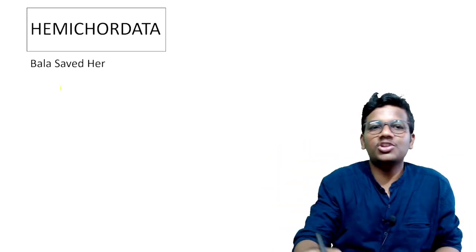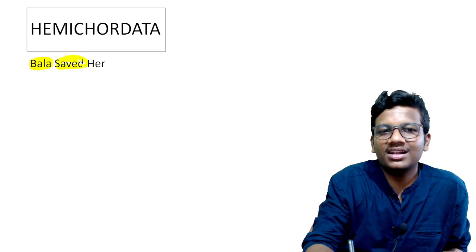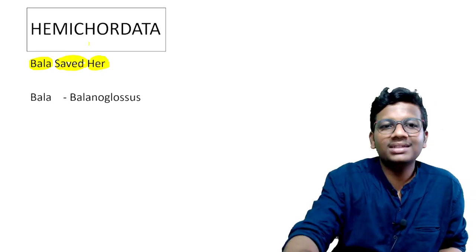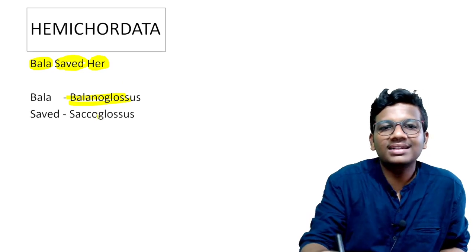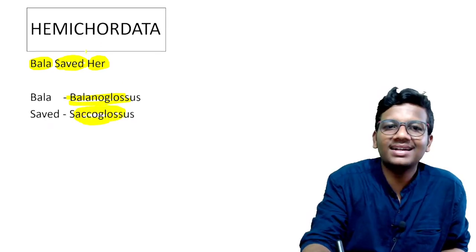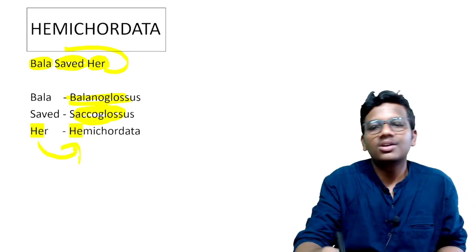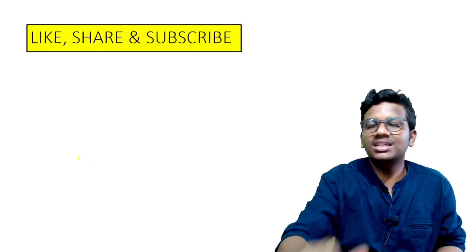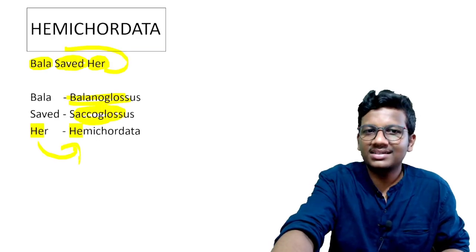Finally, Hemichordata. Very simple mnemonic: 'Bala saved her.' Bala means Balanoglossus, saved means Saccoglossus, and her — HE — signifies Hemichordata. So Balanoglossus and Saccoglossus are the two examples under Hemichordata.